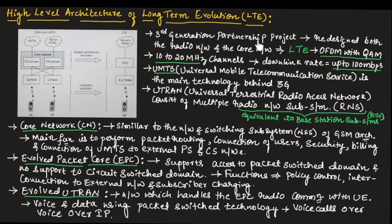The Third Generation Partnership Project redesigned both the radio network and the core network, and this is known as Long-Term Evolution. Long-Term Evolution uses OFDM and QAM technology for modulation — OFDM is Orthogonal Frequency Division Multiplexing and QAM is Quadrature Amplitude Modulation. It uses 10 to 20 megahertz channels and the downlink rate is up to 100 Mbps.